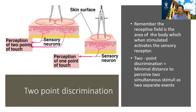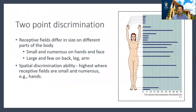Depending on the type of receptors you have within the skin and their receptive fields, you'll either have very good two-point discrimination or limited two-point discrimination. This is something you can test at home. Some parts of the body — like the back of the calf — can have five centimeters between two points and the person won't realize they're separate. But on the face and the hands, just a few millimeters apart and the person is able to tell they're perceiving two points.